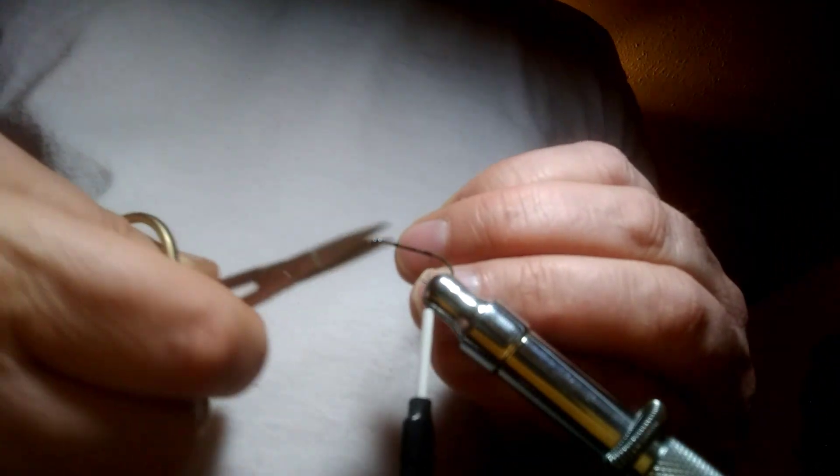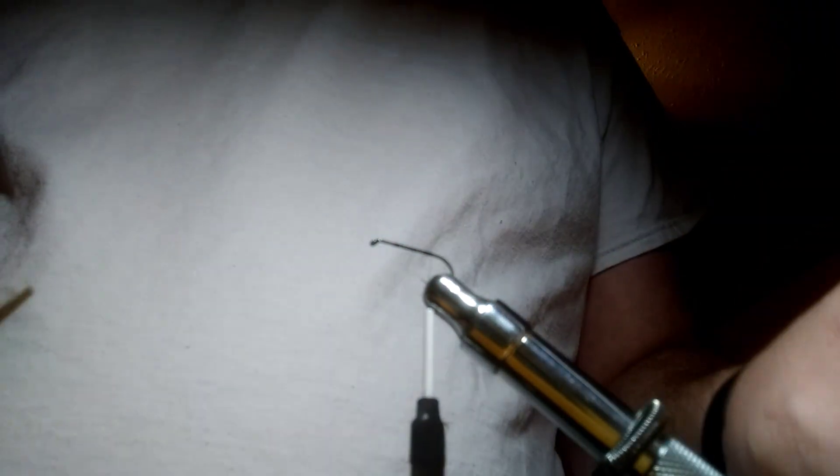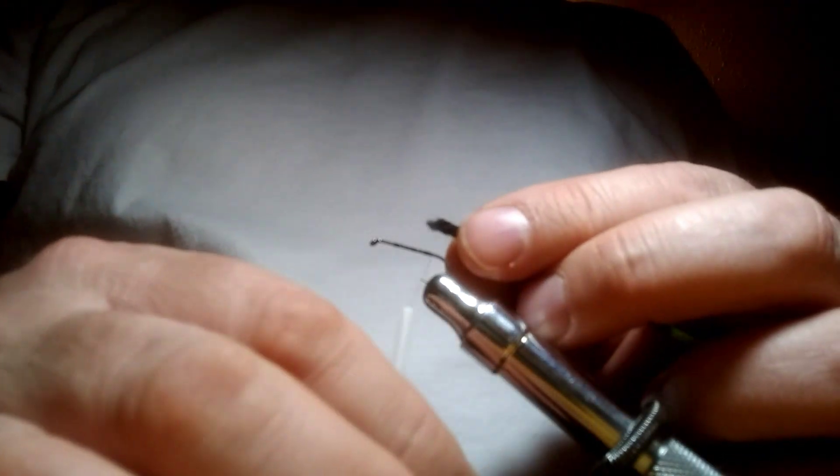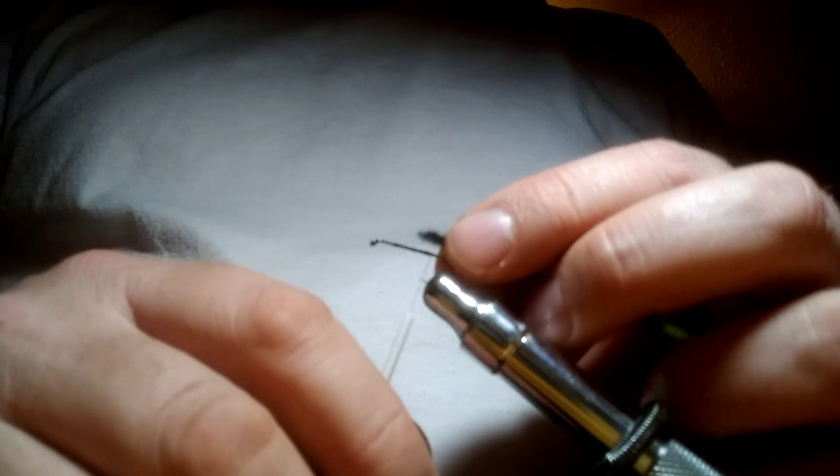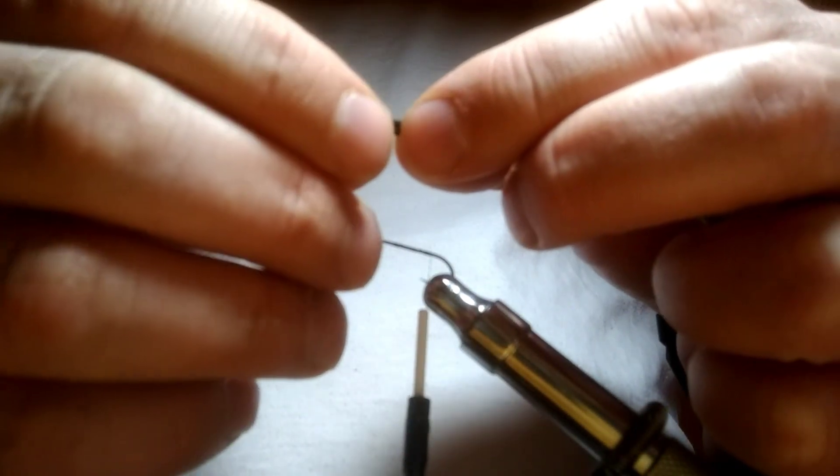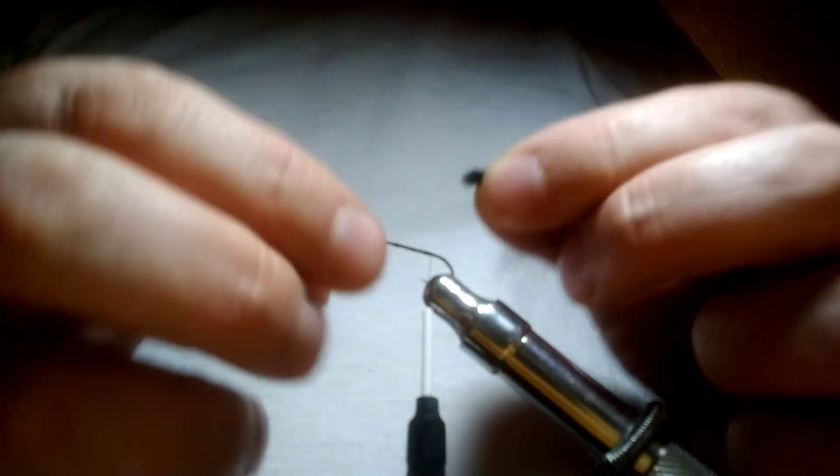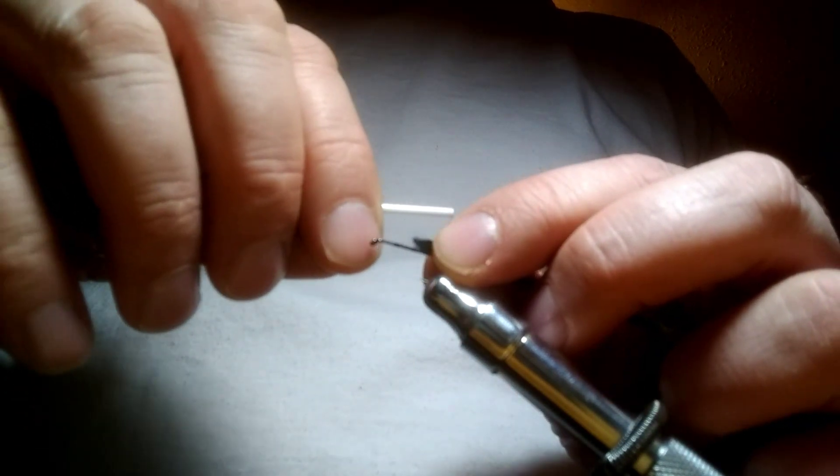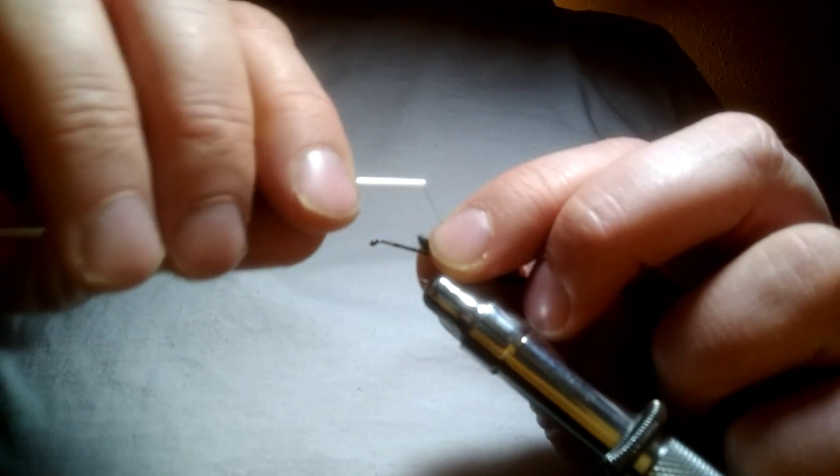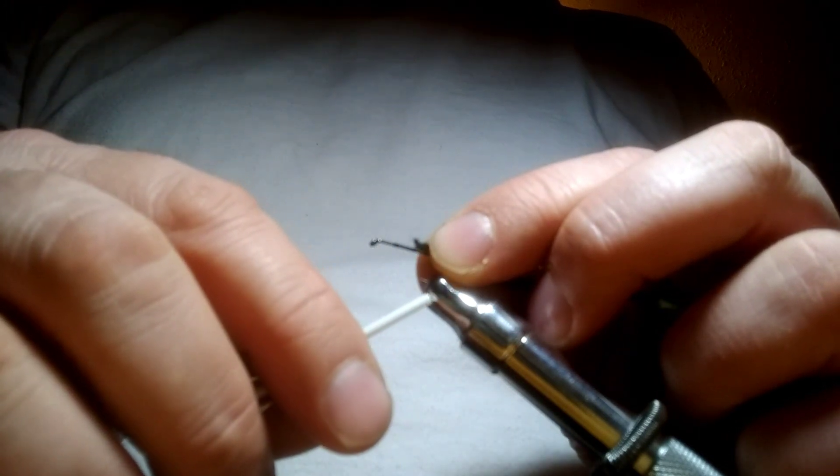Trim off your tag again. Now it's time to tie in your yarn. You want to grab it here just before that little angle where you cut it off. Tie it on here with the pinch method, so you're pinching your line and dragging it down on top.